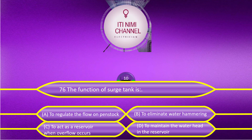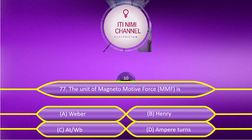The function of a surge tank is: Option A, to regulate the flow of penstock; Option B, to eliminate water hammering; Option C, to act as a reservoir when overflow occurs; Option D, to maintain the water head in the reservoir. The answer is Option B, to eliminate water hammering. The unit of magnetomotive force is: Option A, Weber; Option B, Henry; Option C, Ampere turn per Weber; Option D, Ampere turn. The answer is Option D, Ampere turn.